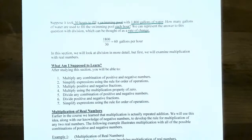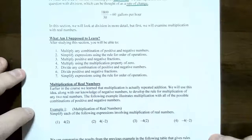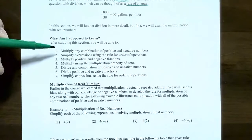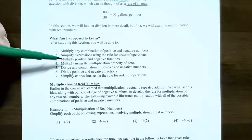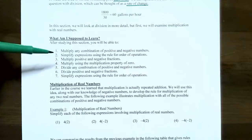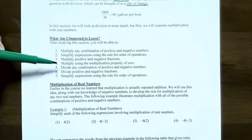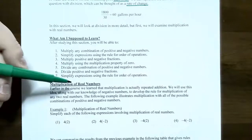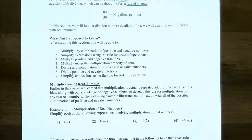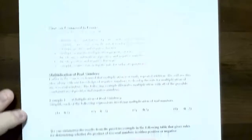In this section we're going to look at multiplication and division of real numbers in more detail. We'll cover multiplication of any combination of positive and negative numbers, simplify expressions using the order of operations with multiplication, multiply positive and negative fractions, use the multiplication property of zero, divide any combination of positive and negative numbers, divide positive and negative fractions, and simplify expressions using order of operations with division.